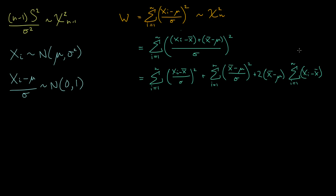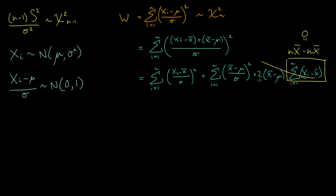The first thing we notice is that when we compute the cross-product term, the sum from i equals one to n of our data is just n times the sample mean. But when we sum the minus x-bar term n times, we get n repeats of minus x-bar, and that's going to be equal to zero. So this entire last term gets annihilated — it goes to zero.